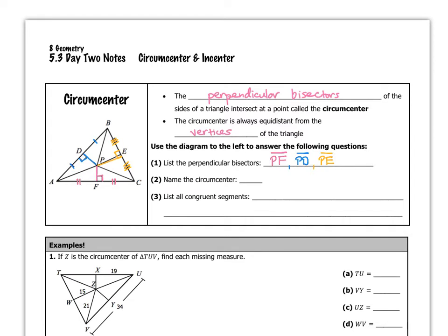The circumcenter, from the definition above, is the point where the perpendicular bisectors of a triangle intersect. So those three segments that we listed all intersect at the point P, which means P is the circumcenter of the triangle.